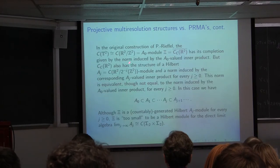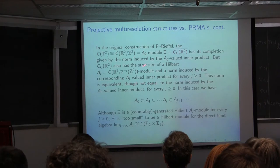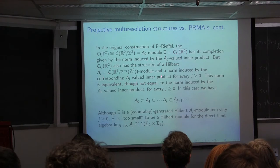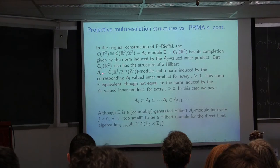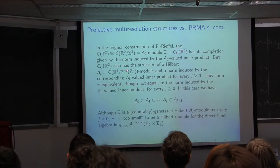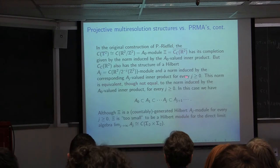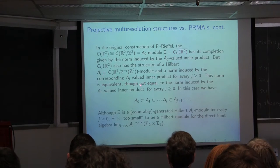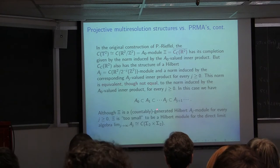Looking at the original Hilbert module C that we considered: if you modify the inner product at each stage, C can be given the structure of an A_j module, where A_j = C(R² / (2^{-j} Z²)), and these A_j form a nested increasing sequence. The norm changes at each stage — making it into an A_j module — but it is equivalent to the original norm, changing by a power of two in this case. So C is a countably generated Hilbert A_j module for every j, but on the other hand C is too small to be a Hilbert module for the direct limit algebra, which is continuous functions on the two-solenoid cross itself.